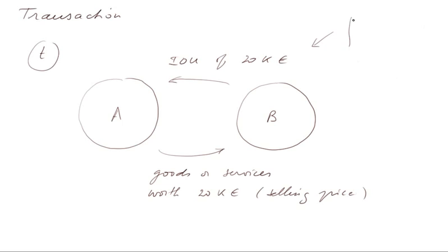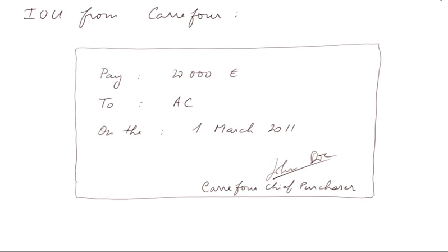This AOU is a piece of paper, or the equivalent. In the example from Carrefour, this AOU looks a bit like a check. It's a piece of paper that specifies: pay 20,000 euros to AC — myself, for instance — on the 1st of March 2011, that is in 45 days from today. This piece of paper is signed by Carrefour's chief purchaser, for instance John Doe.